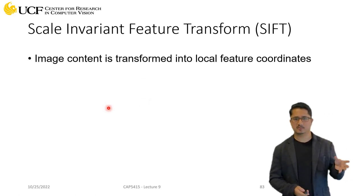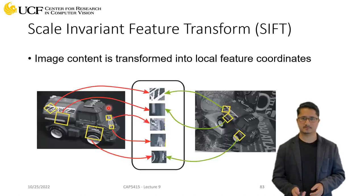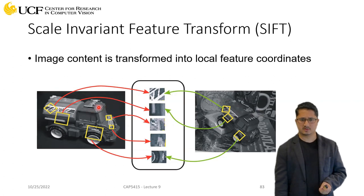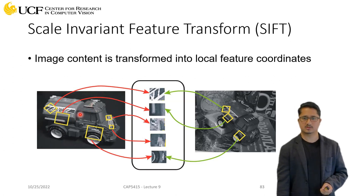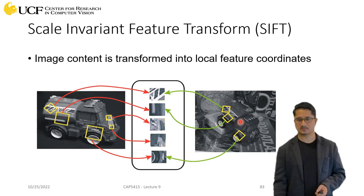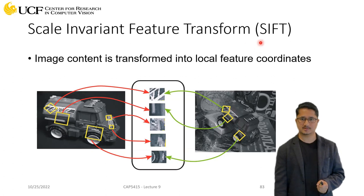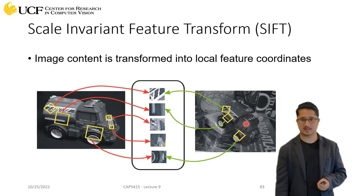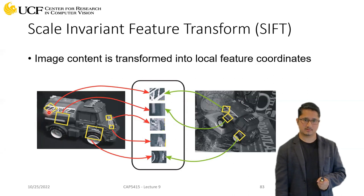Given an input image, we try to extract local features based on key point extraction. Looking at the image on the left — a truck — as humans we can say the orientation and scale of this truck versus the one on the right are quite different, but we can easily say they are similar trucks. For a computer algorithm this is very challenging. SIFT is scale invariant, rotation invariant, and translation invariant, and we have all three of those factors present between these two images.